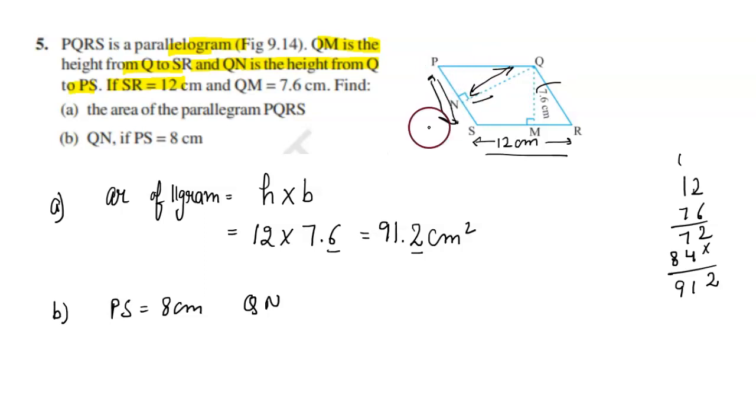PS is given, so for this base the height is QN. So our area equals PS into QN. Area is 91.2 equals PS is 8 into QN, which we have to find.